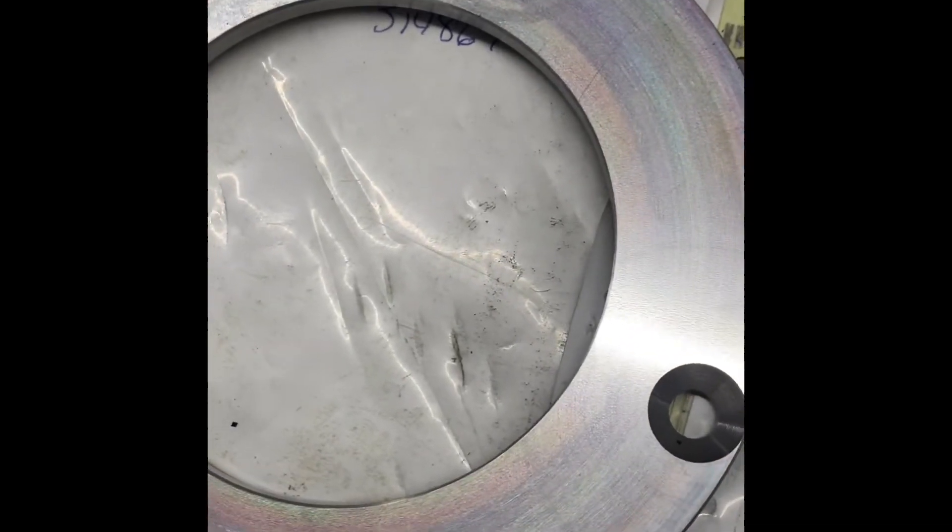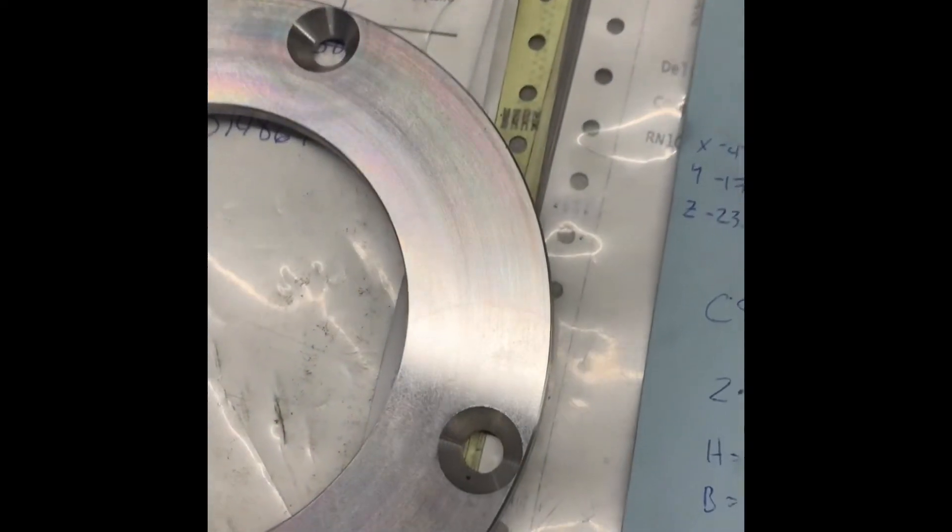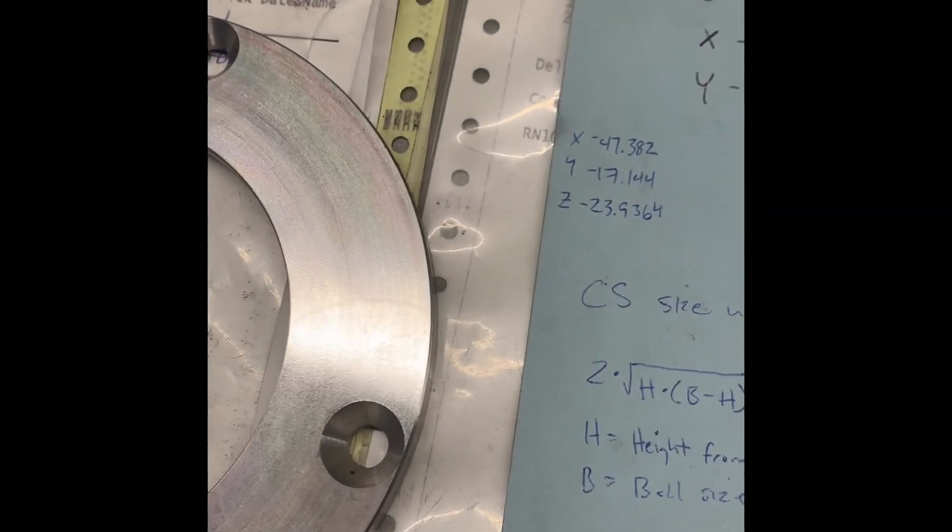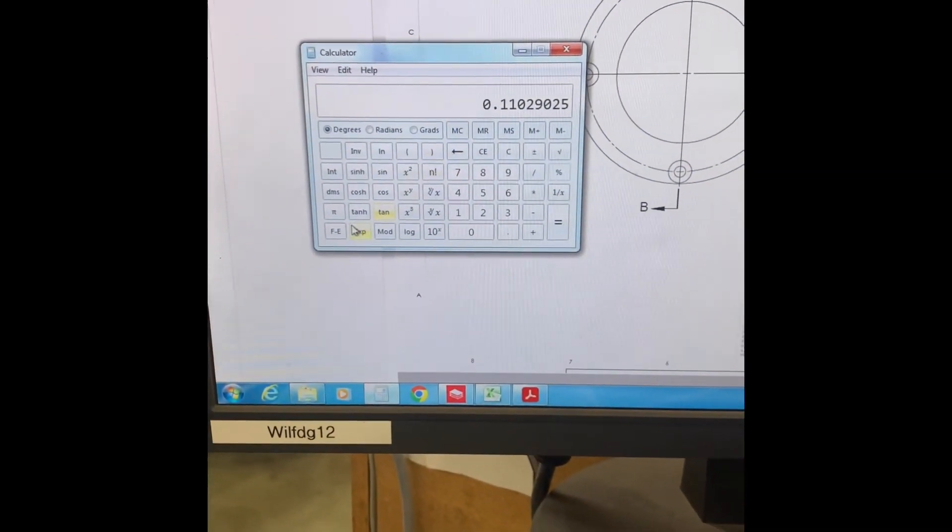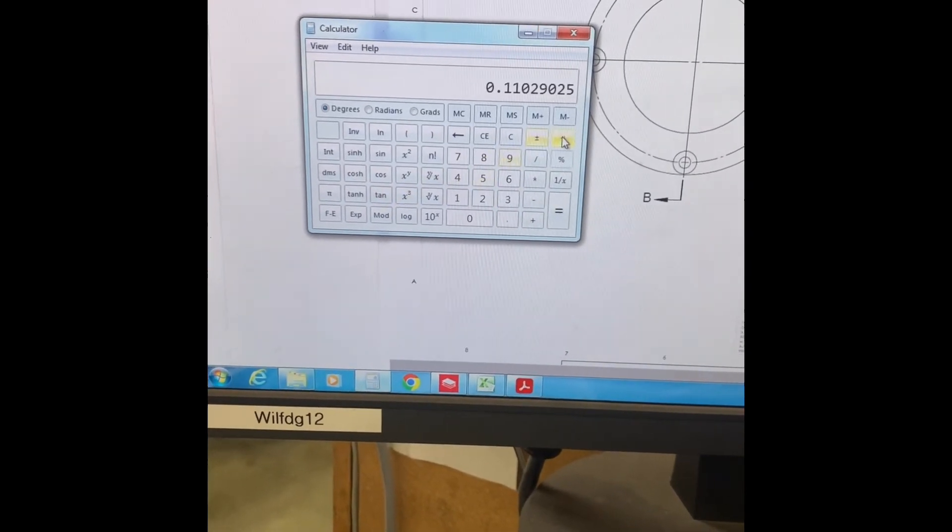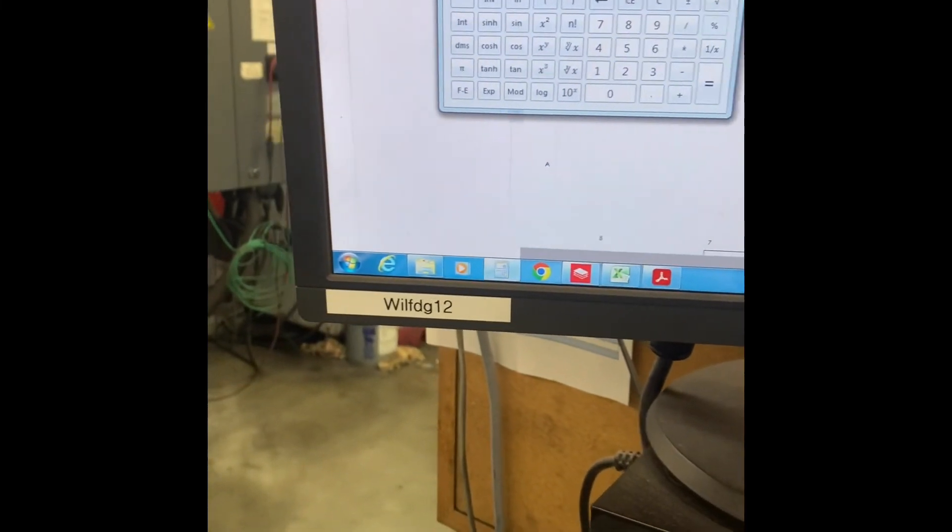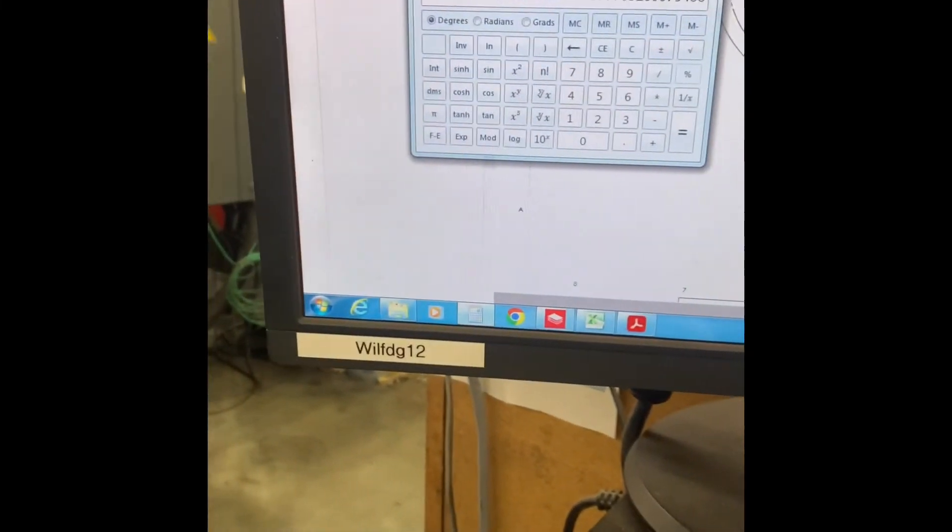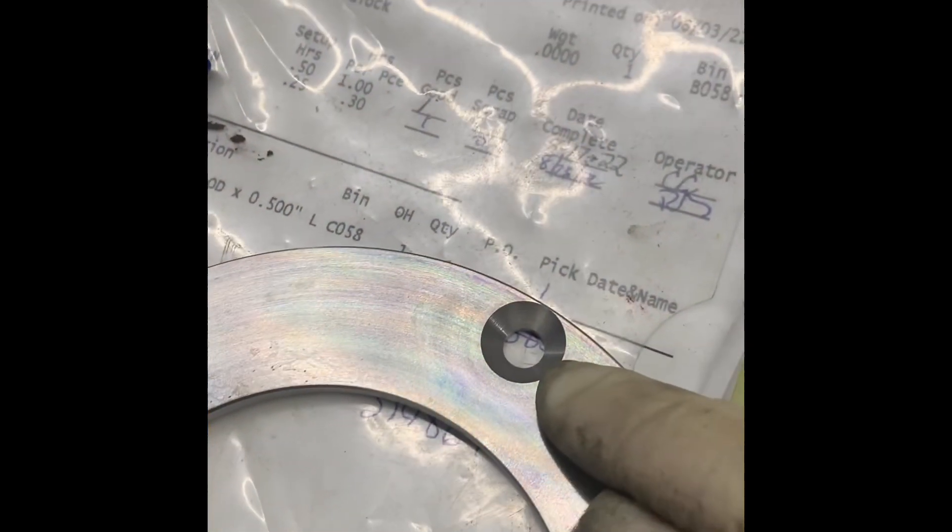So then we're going to take that number and take the square root of it, which is going to be 0.332. And then we're going to times that number by 2. And that'll give you the size of the diameter that you have in your part, or the diameter of the countersink that you have in your part.